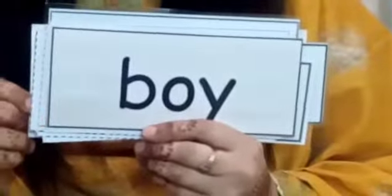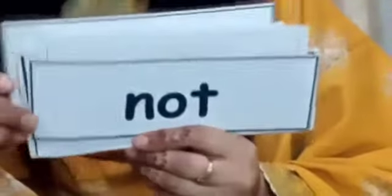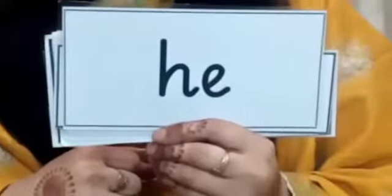Now this time students, you will repeat these sight words after me. On. To. Shabash. Boy. Very good. Go. Shabash. Can. Very good. Car. Good. Run. Put. Shabash. Not. Shabash. He. Good. Me. Yes. Good. At. Good. In. Very good.